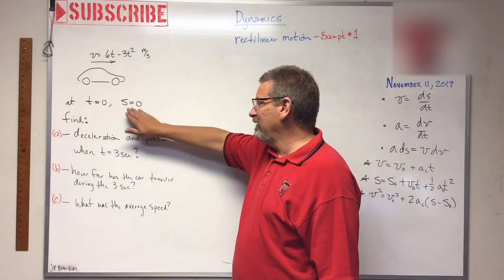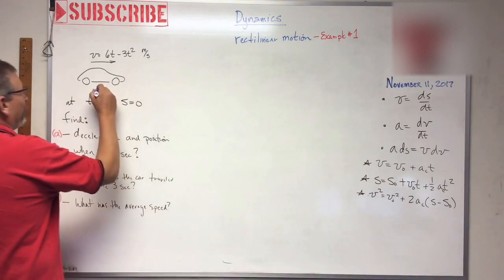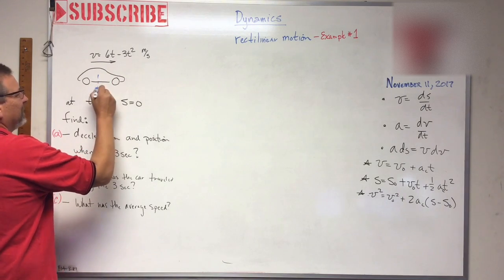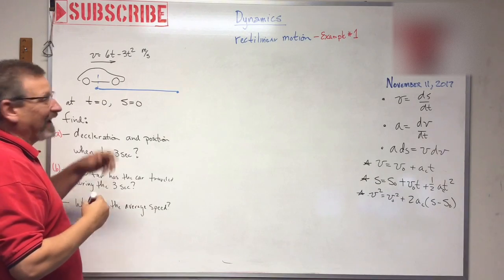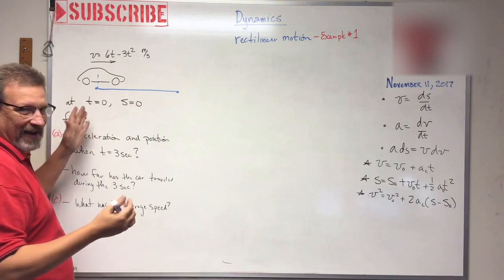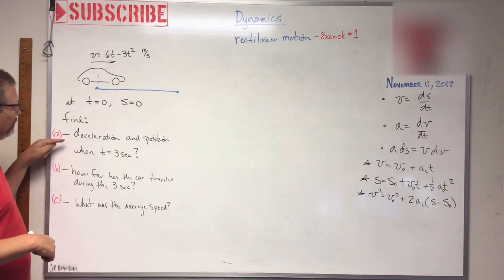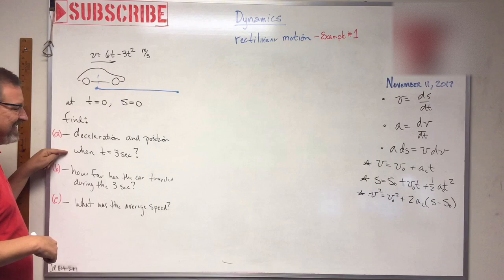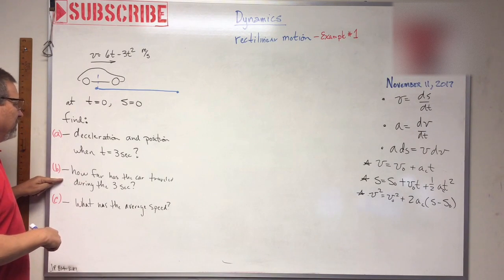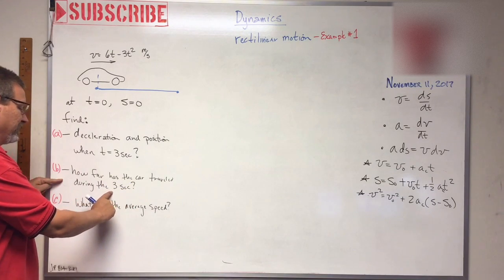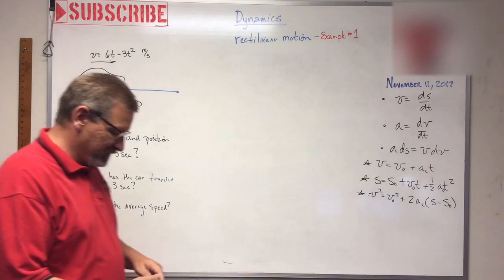They tell us at time zero the displacement is zero, so this thing is gonna start off at the origin and go out to some point. If the time is long enough, it may go out and come back. Find the deceleration and position when t equals three seconds, find how far the car has traveled during those three seconds, and find out what the average speed was. Let's see if we can do that.